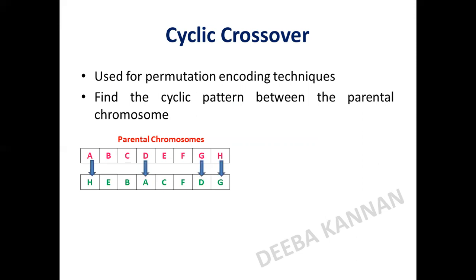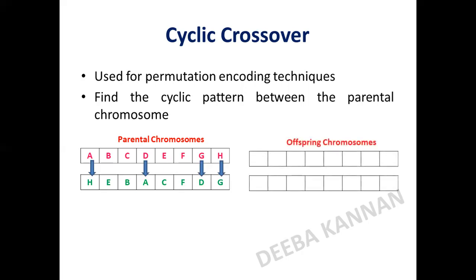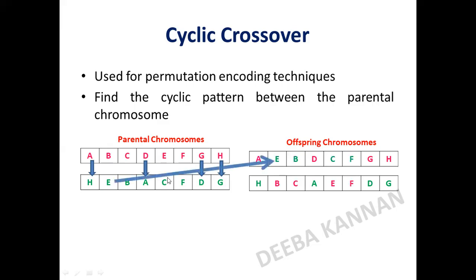After finding the cyclic pattern, we write those genes as-is into the offspring chromosome. The cycle found in the permutation encoded parental chromosome is replicated in the offspring. The remaining positions — where the cyclic pattern does not occur — are filled with genes from the second parental chromosome, such as 'e', 'b', 'c', and 'f'.